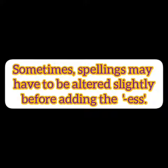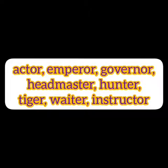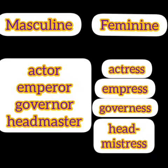Sometimes spellings may have to be altered slightly before adding -ESS. Like actor: the spelling of actor is A-C-T-O-R, and when we write the feminine noun for actor, the spelling will be A-C-T-R-E-S-S — actress. Here we remove the O and then add -ESS after R.